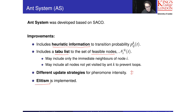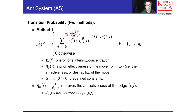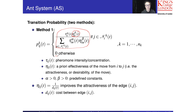So elitism is what we are going to implement. The first improvement, as mentioned before, is the transition probability with a different expression. This is the Pij now in the ant colony optimization algorithm. The formula looks very similar, but if you remove this additional bit, it reduces to the transition probability used before. That means if node j belongs to the feasible set, we compute the transition probability using this expression. Otherwise, the transition probability will be 0.